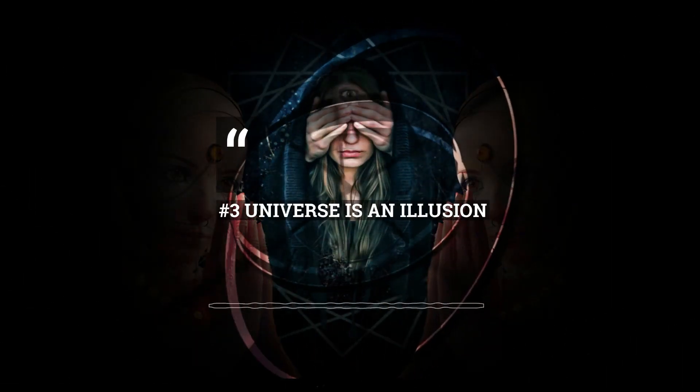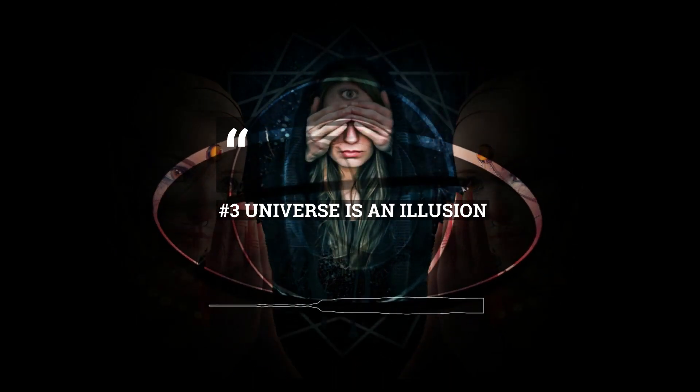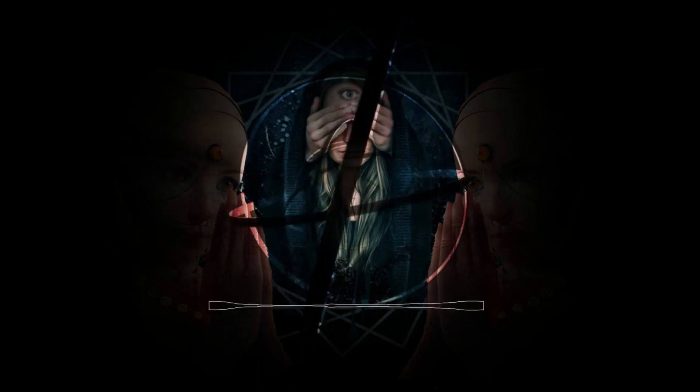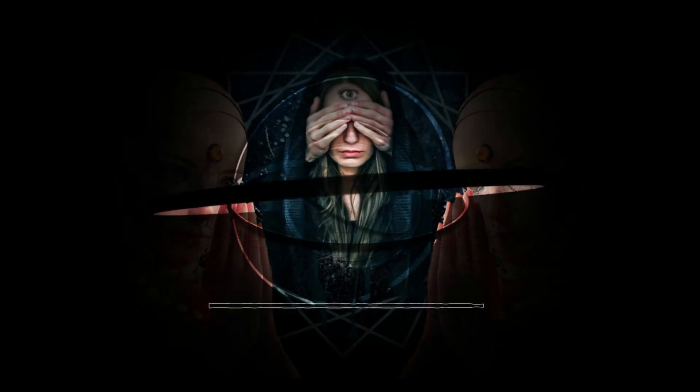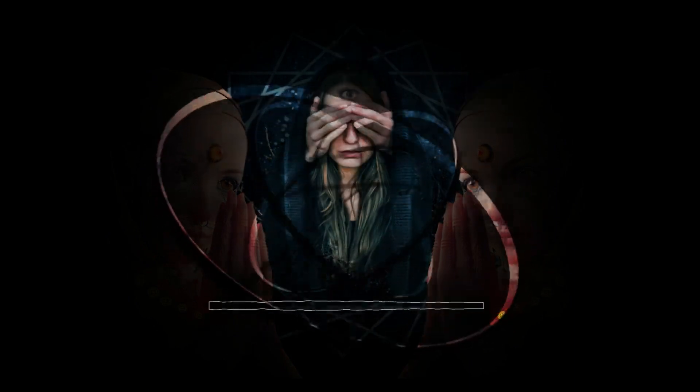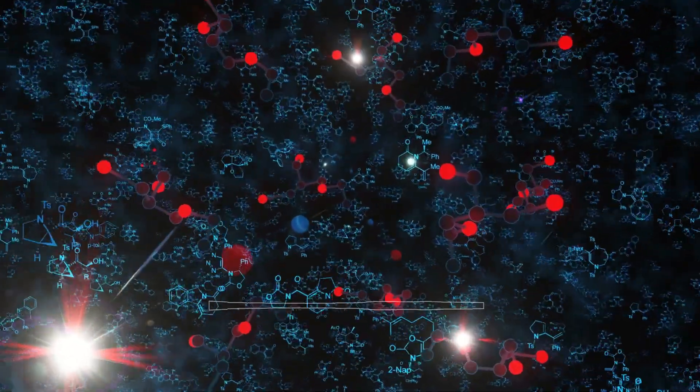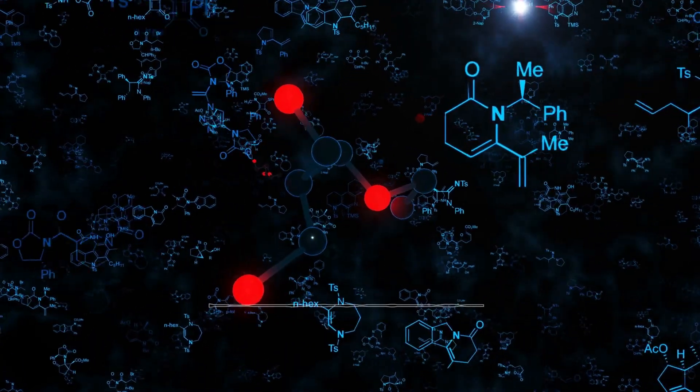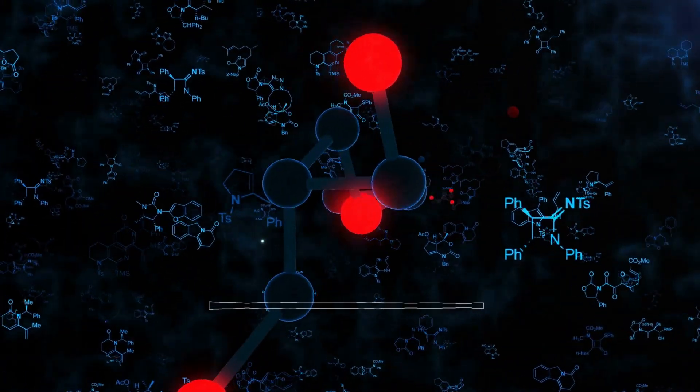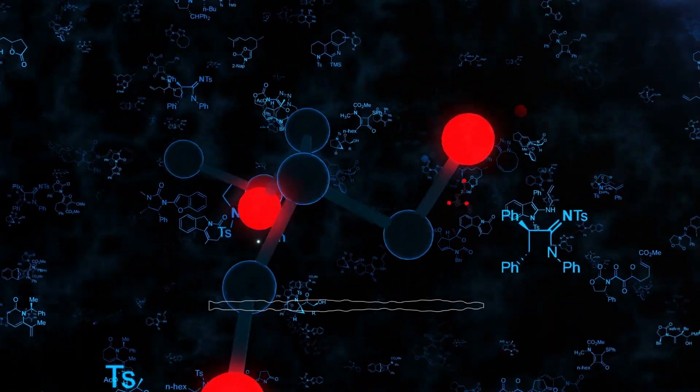The third concept: Maya in Advaita Vedanta bears striking similarities to the phenomenon of superposition in quantum physics. Maya refers to the illusory nature of the world, highlighting that what we perceive as solid and separate is in fact an ever-changing and transient appearance. It emphasizes that our limited senses and conditioned minds create a veil of illusion that shrouds the true nature of reality.